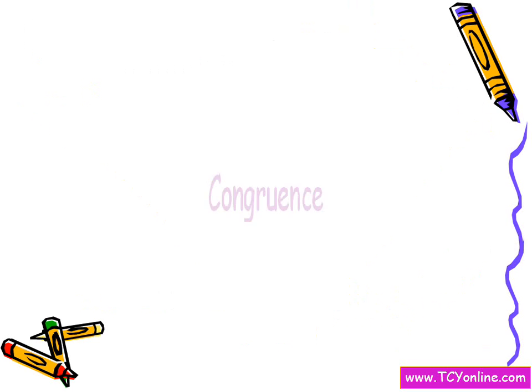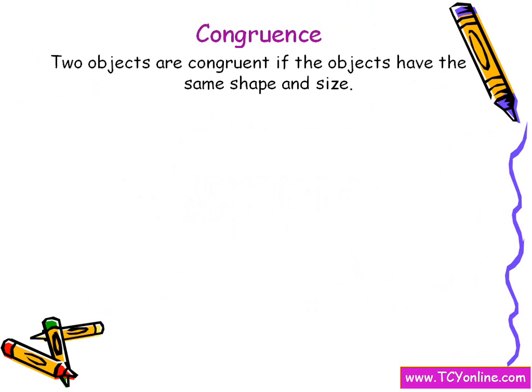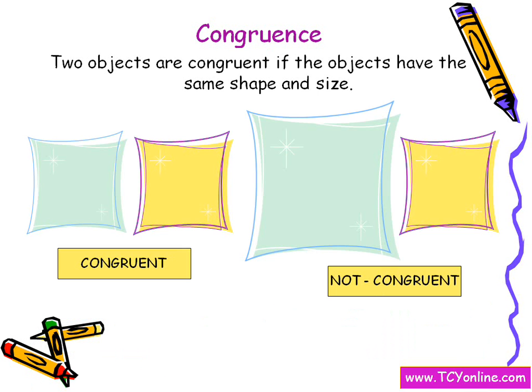First of all, let's look at the definition of congruence. Two objects are said to be congruent if the objects have the same shape and size. For example, these two figures are said to be congruent because they have the same shape as well as size. While these two figures are said to be not congruent because they have the same shape but not the same size.